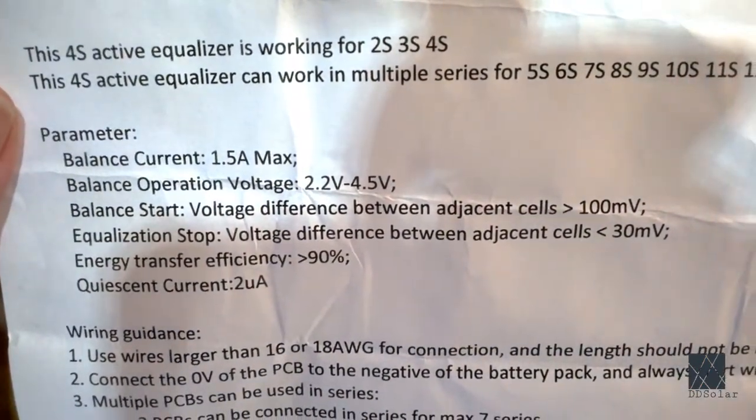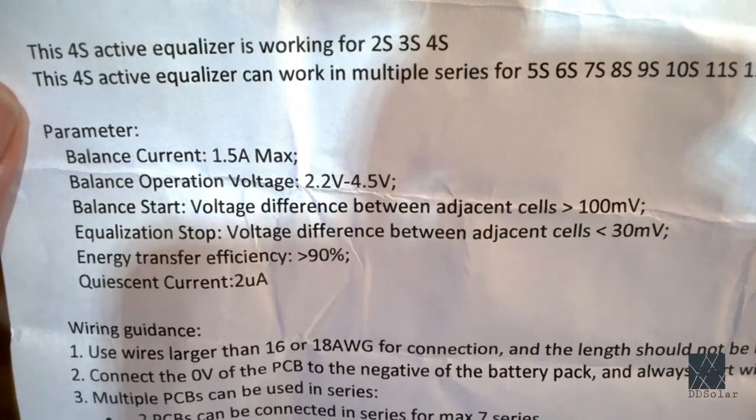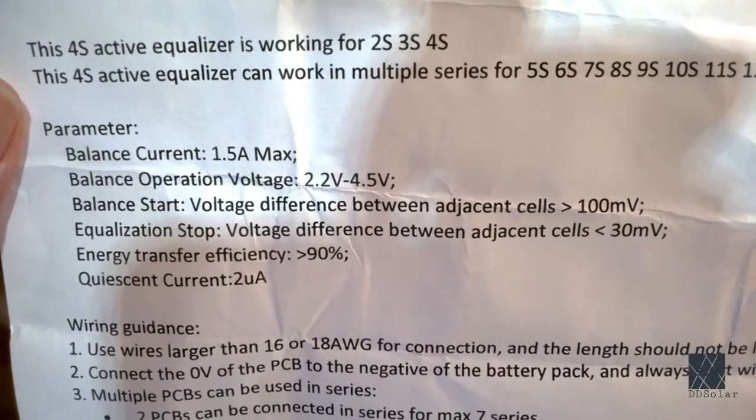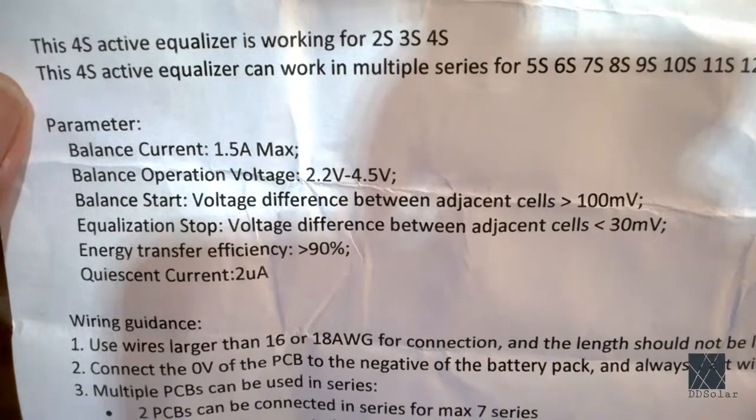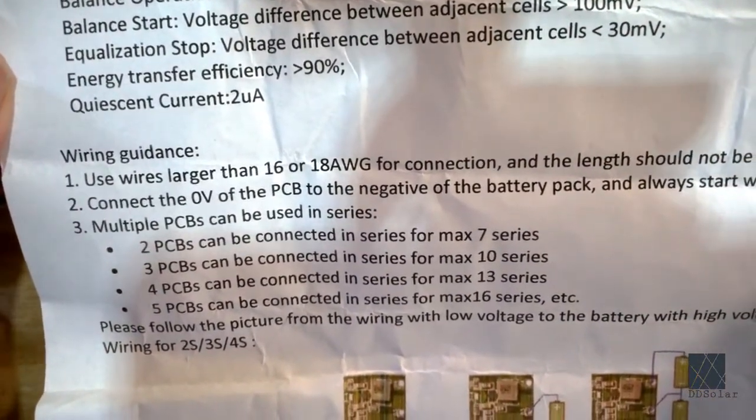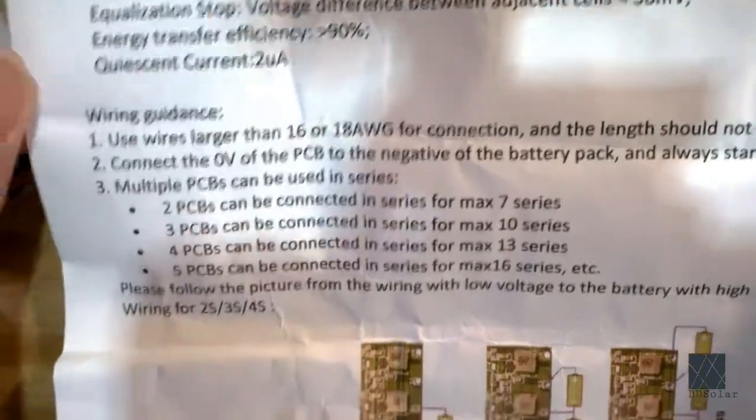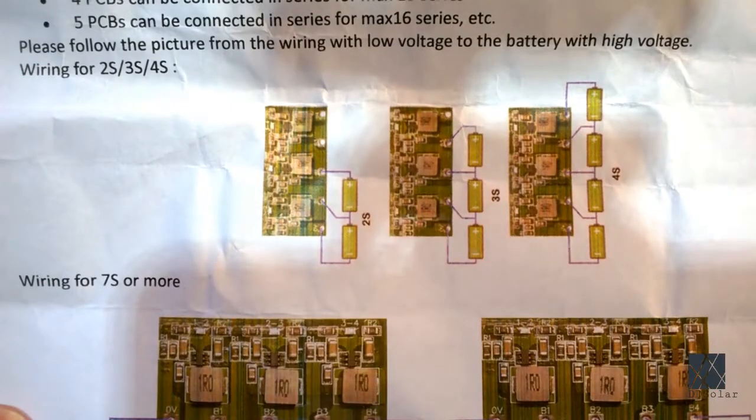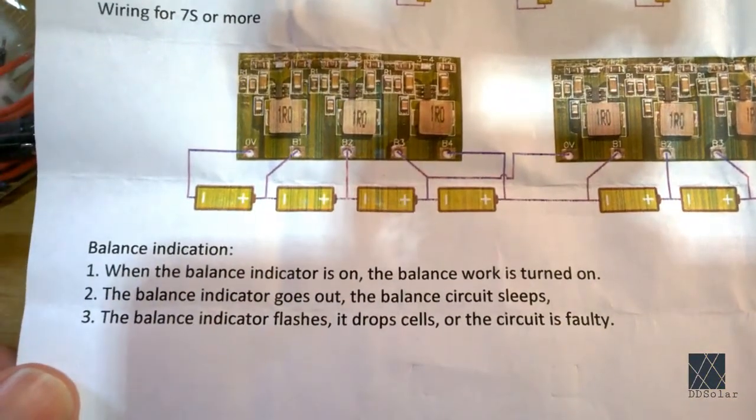Actually, that's a little high. I'd rather be 30 millivolts. It says that it'll stop balancing when it's less than 30 millivolts. But I already bought it and I want to give it a try. And here's some diagrams showing how to connect the cells as well as what the lights do.